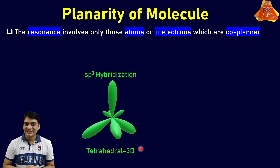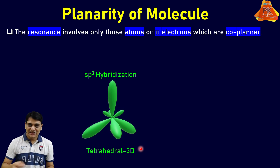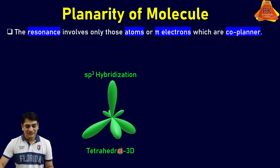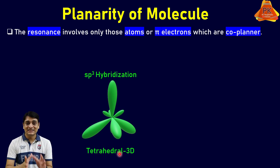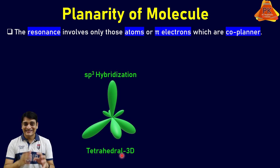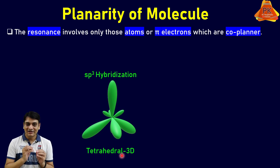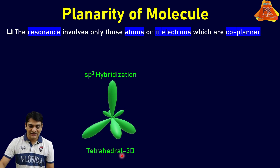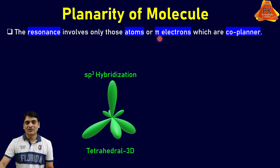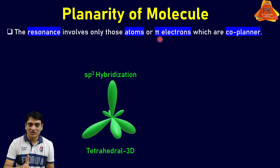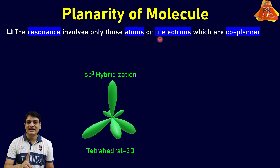As you have seen, in sp3 hybridization the structure is tetrahedral, meaning it is three-dimensional. Whenever a structure is 3D, there will be no possibility of resonance because pi electrons will not be present in a single plane.